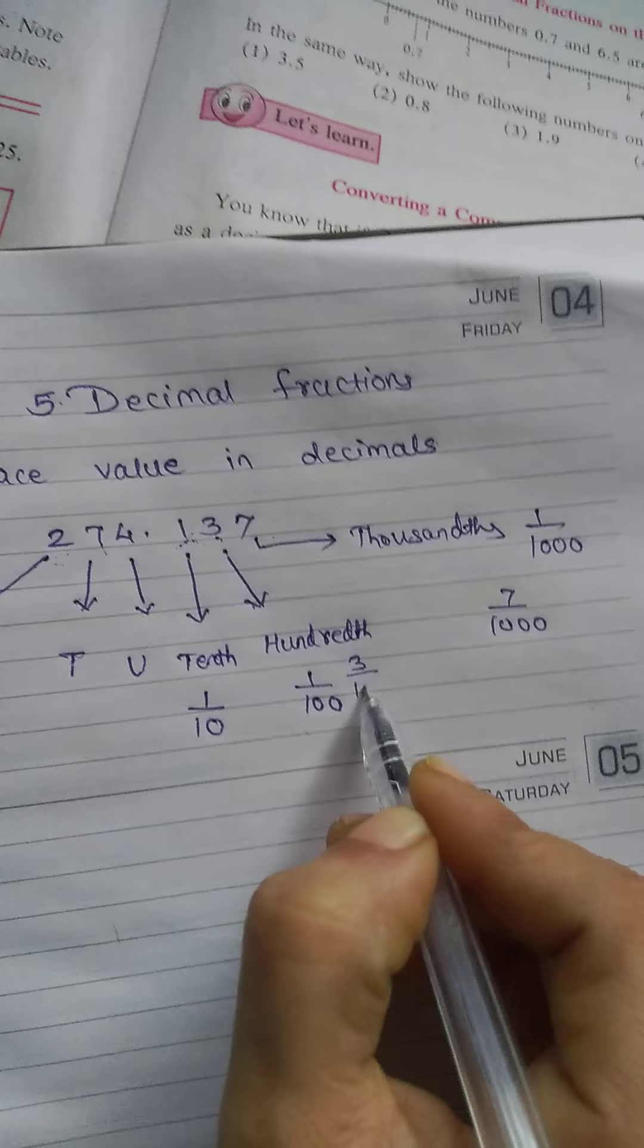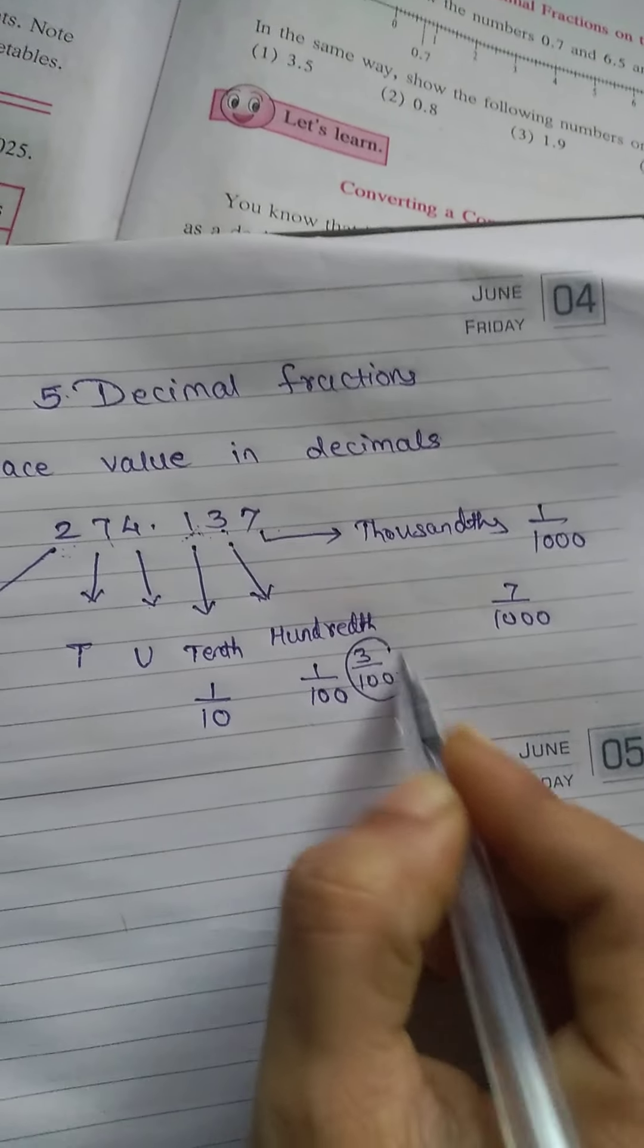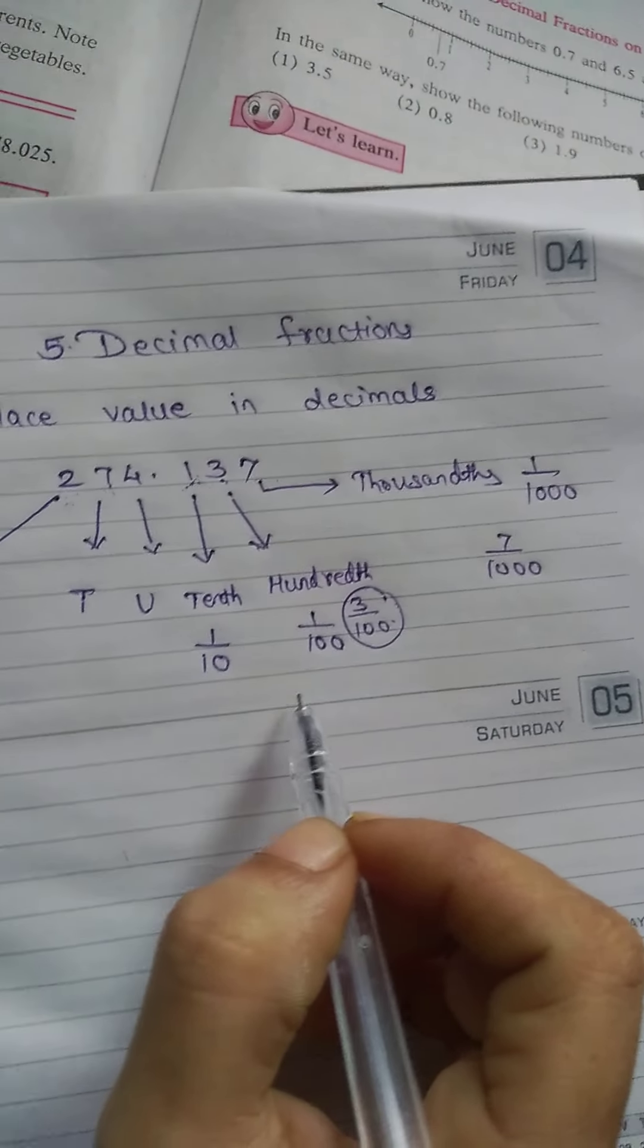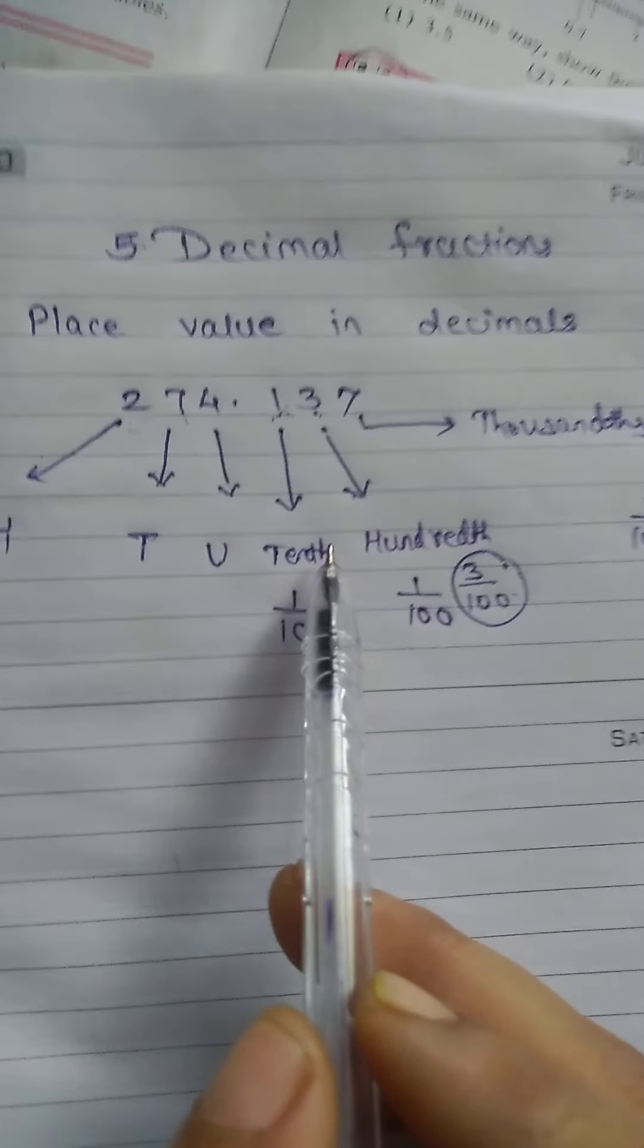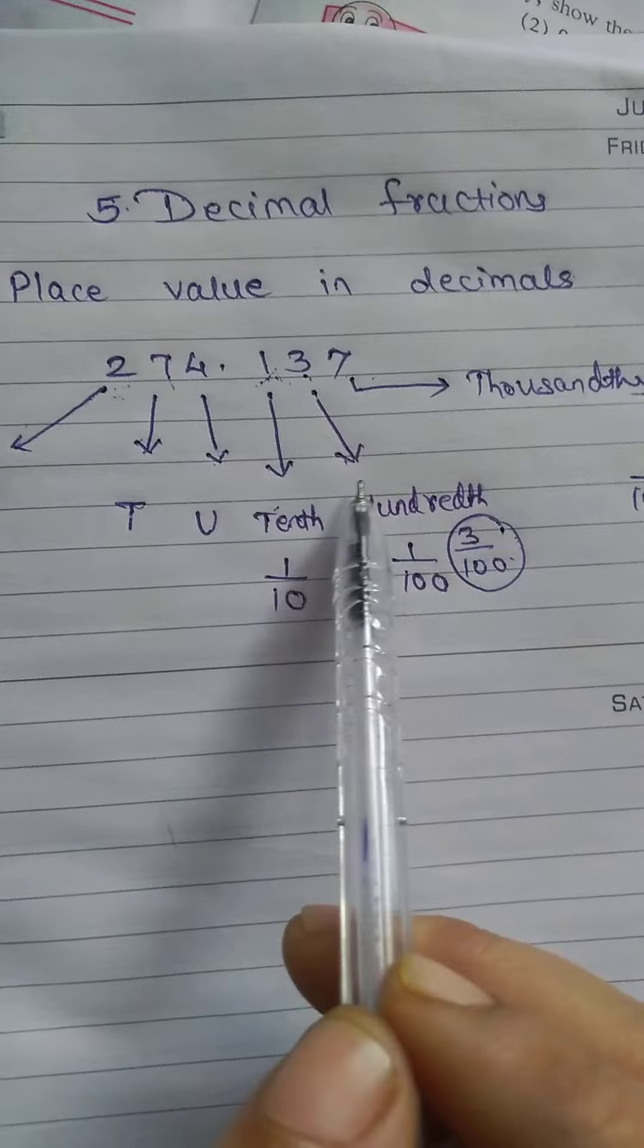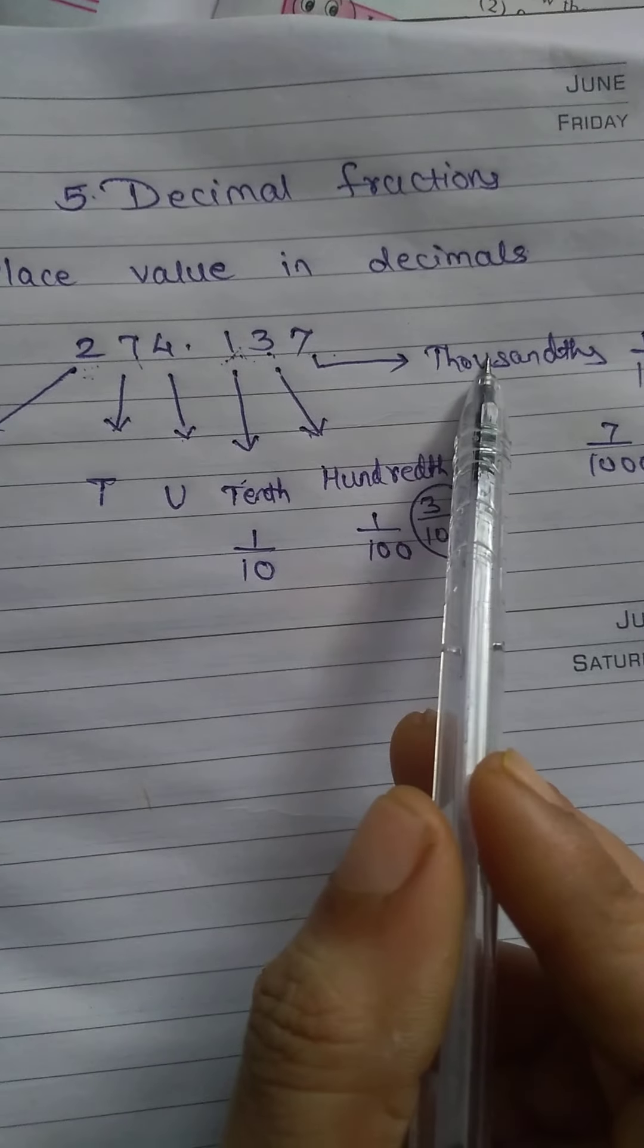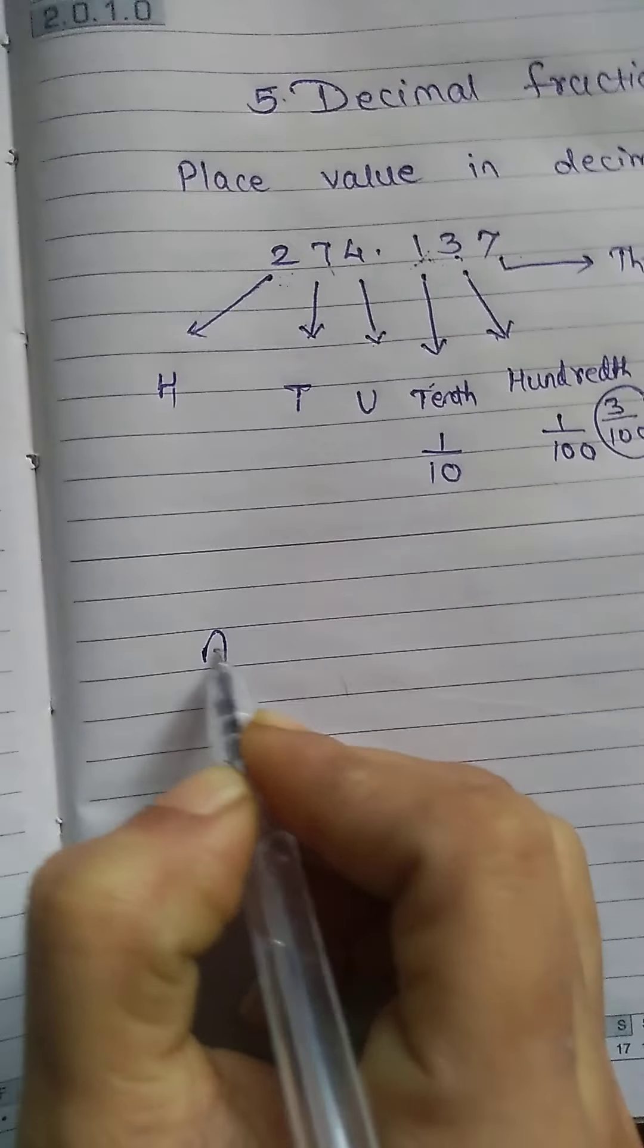It will be 3 upon hundred. From this value, clear? So if they ask you to write the place value of this number, then it will be tenth, this will be hundredth, and this will be thousandth. Now after that we will study about the addition of decimals.